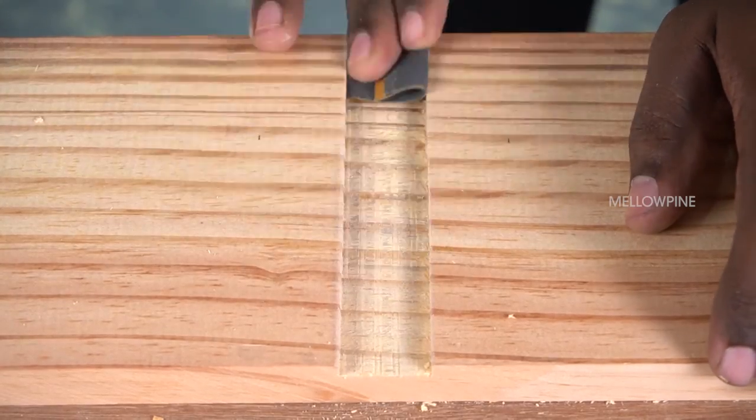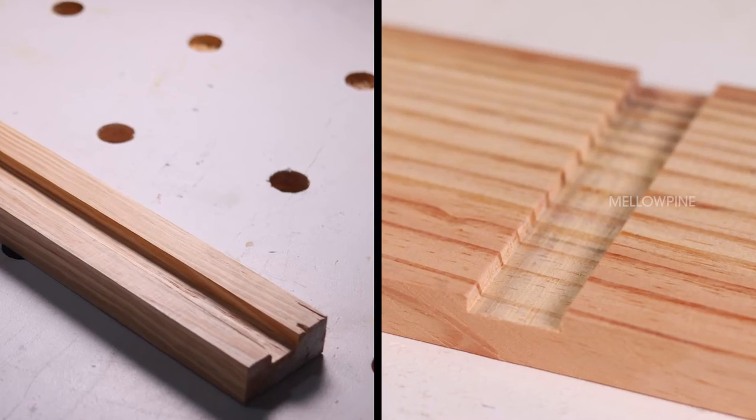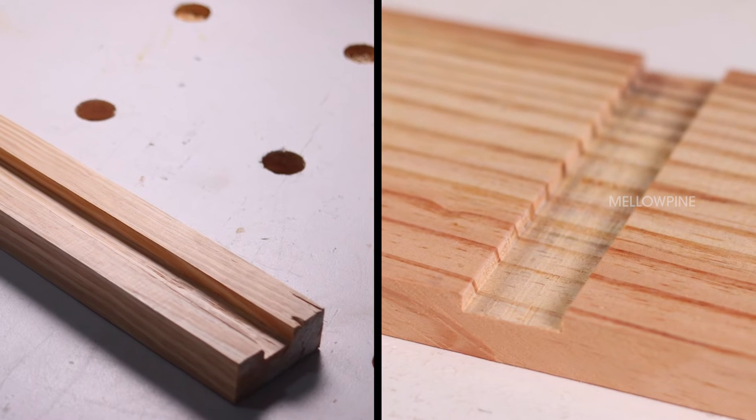For finer finishing, smooth out the groove using sandpaper. So those are the two methods to cut a groove in wood using a circular saw.